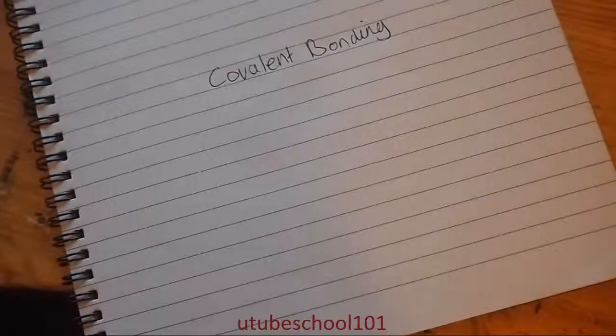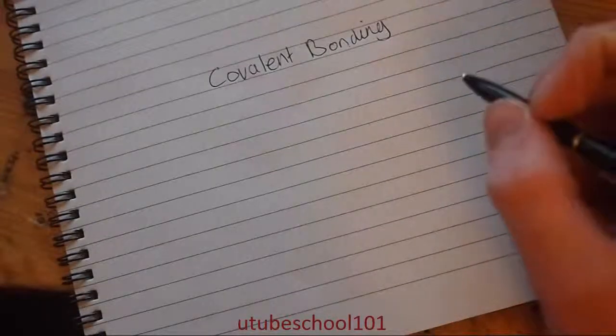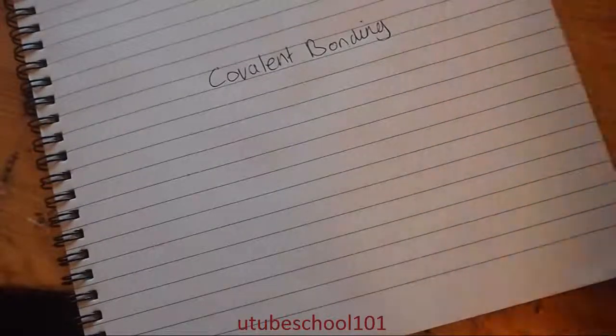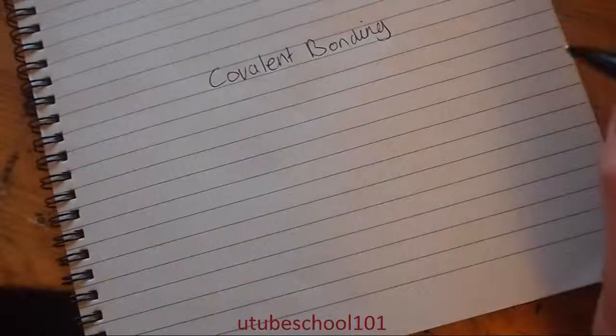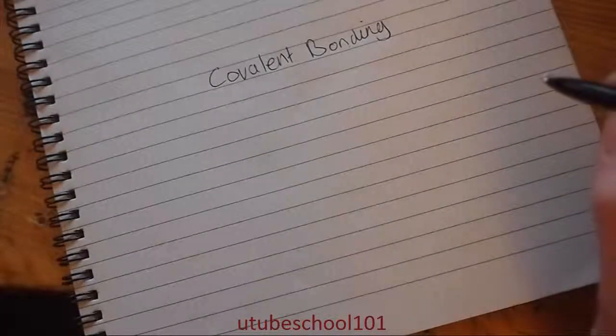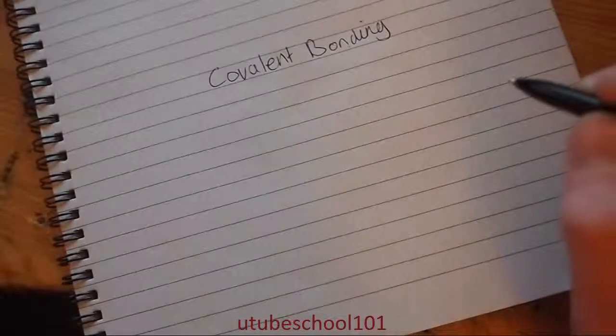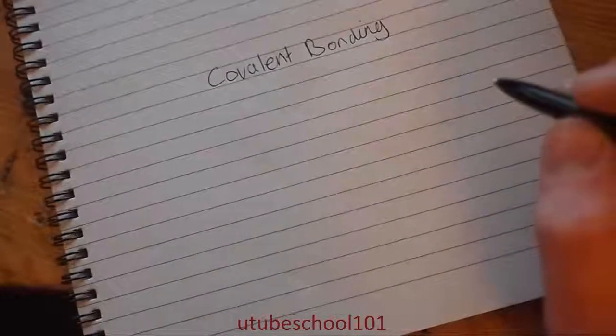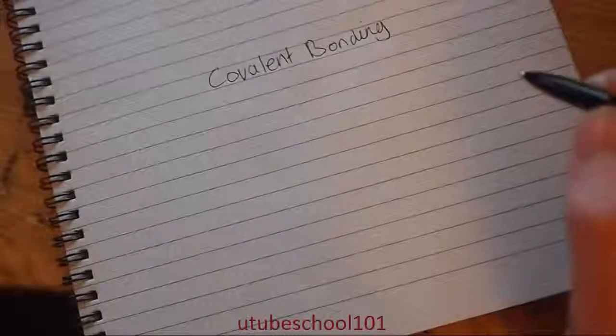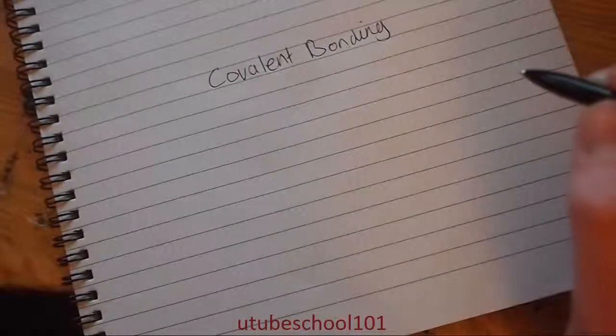Hi there YouTube and welcome to my lesson on covalent bonding. Covalent bonding is the joining of two elements which are both non-metals. They do this by sharing electrons in order to get full shells.